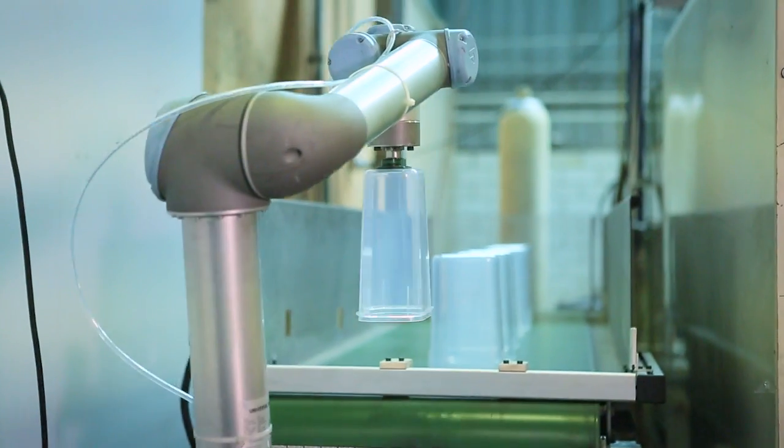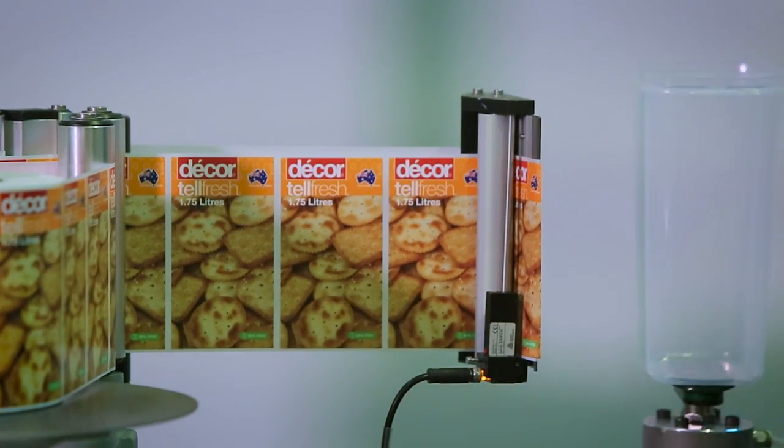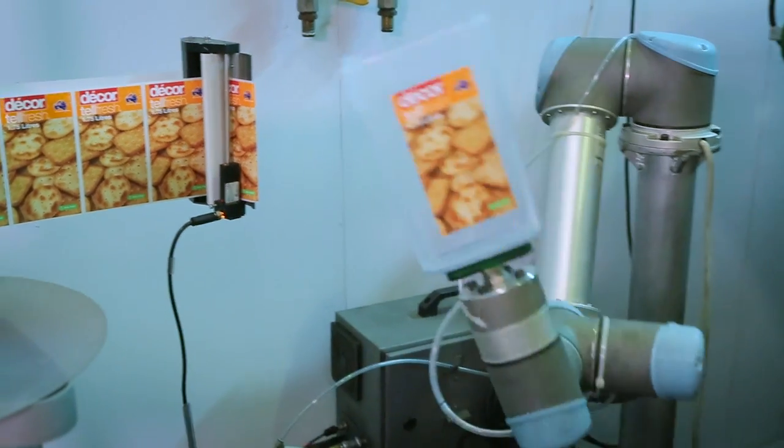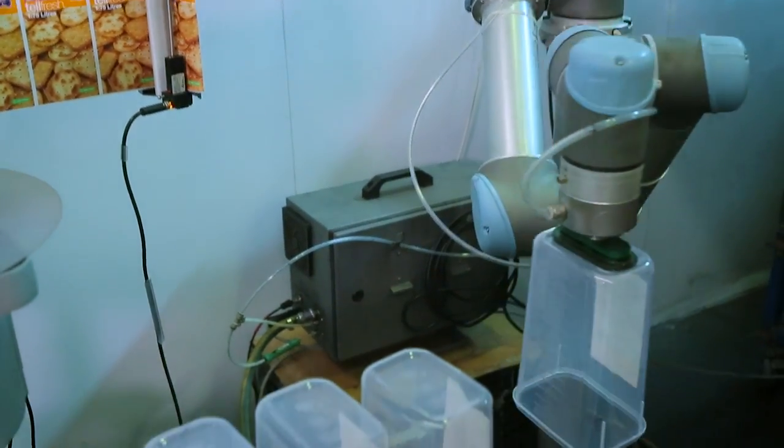The UR5 picks up the product from an outgoing conveyor, orientates it in front of a labeler, and depending on the shape of the container, whether it be round or flat, will rotate or move across the labeler and then place the labeled product to an outgoing table to our operator.